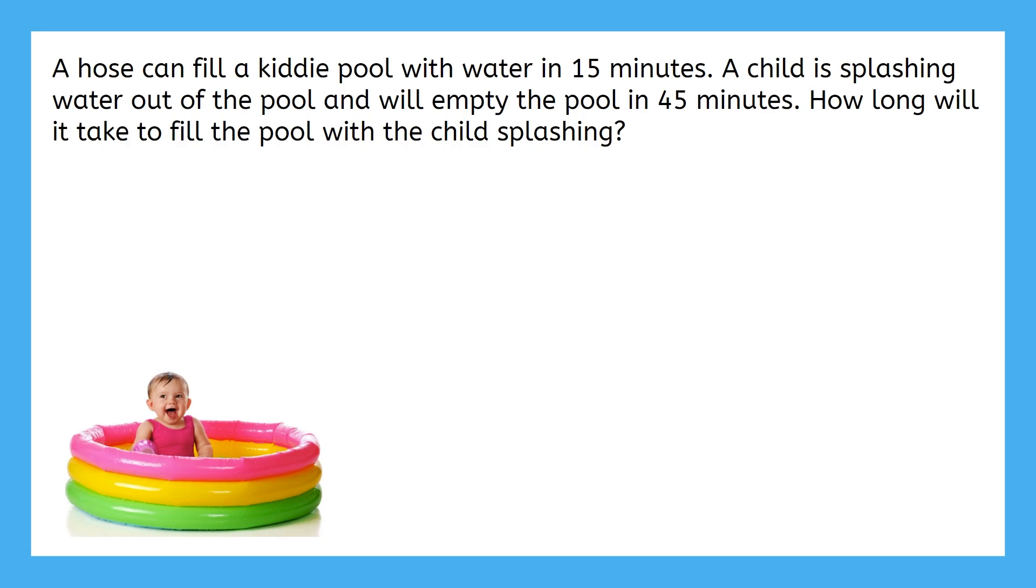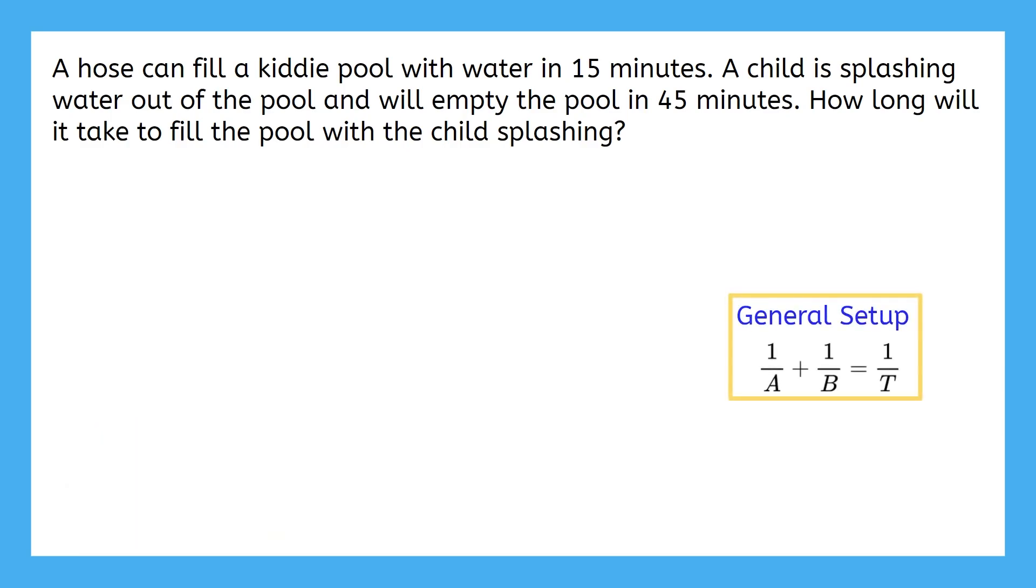Picture what's happening here. The hose is filling the pool, but the child is taking water back out. Instead of working together, these rates are working against each other. Let's think about how that could change our general setup. The time to fill the pool is 15 minutes, and the reciprocal of this is 1 over 15. That takes care of the first fraction.